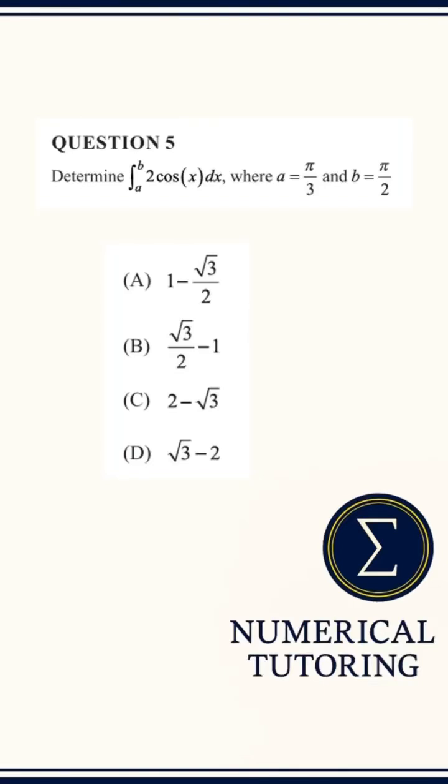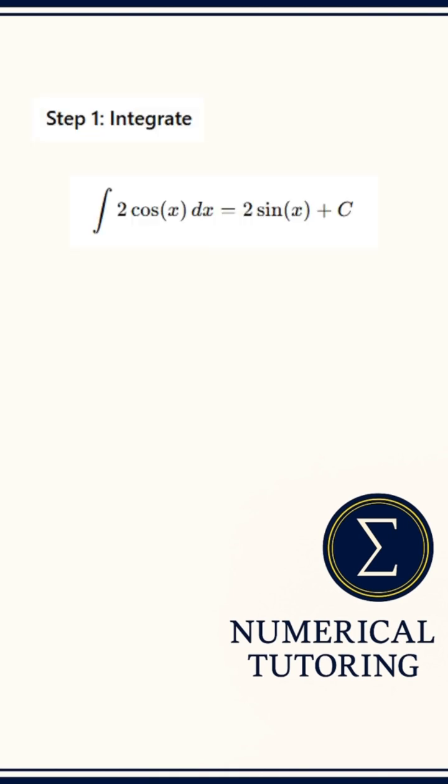Here's a definite integral you need to nail for methods. We're asked to evaluate the integral from a equals π over 3 to b equals π over 2 of 2 cosine x with respect to x. Step 1: Integrate.